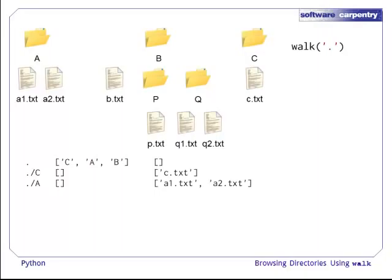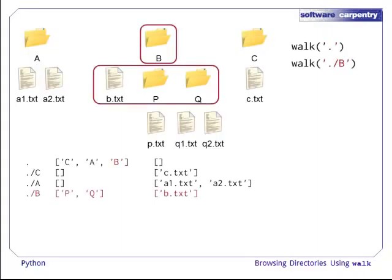And again, we are back in the original call to walk. This now moves on to the next directory in the list, which is B. B has one file, B.txt, and two directories, P and Q.